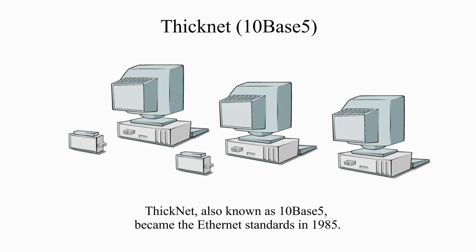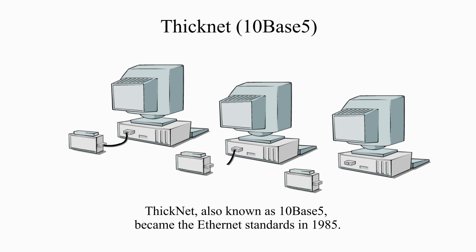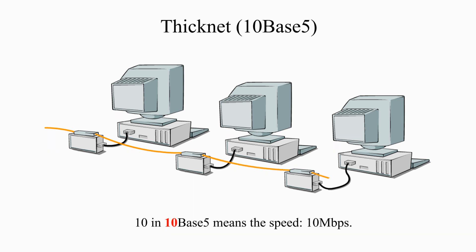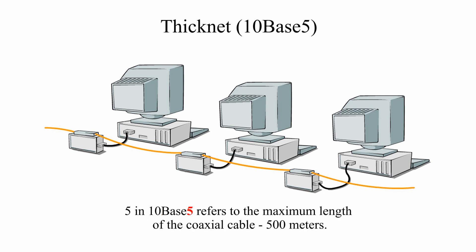Thicknet, also known as 10Base5, became the Ethernet standard in 1985. In 10Base5, '10' means the speed — 10 Mbps. 'Base' means a baseband system. '5' refers to the maximum length of a coaxial cable — 500 meters.